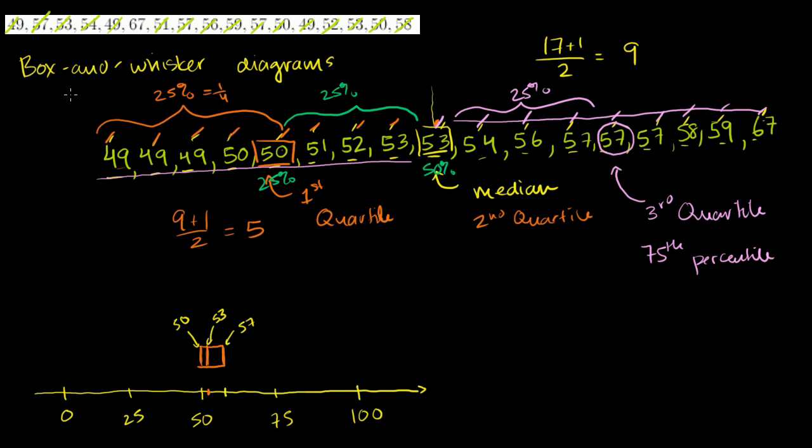Now, it's called a box and whisker diagram. I've only drawn a box. Let me draw the whiskers. The whiskers essentially show us the entire range of data. So the lowest data point is 49, which is right over here. Highest data point is 67. So what a box and whisker diagram is showing us, 50% of the data is within this box. But just to get an idea of the range of the data, it shows whiskers to show the low point all the way to the high point.